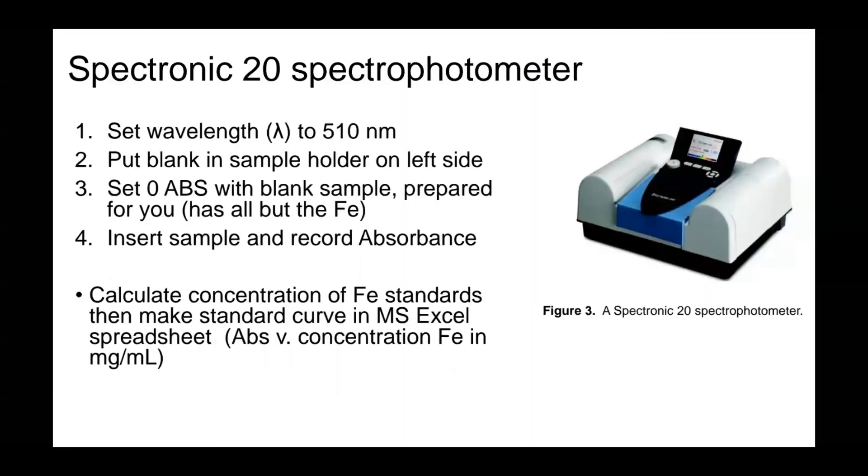So you run your series of standards and construct a calibration curve. First, make sure you calculate the concentration of iron in each standard. Then make the calibration curve in Microsoft Excel spreadsheet in the lab. You are going to have a table of absorbance and concentration.